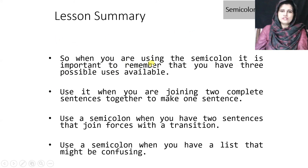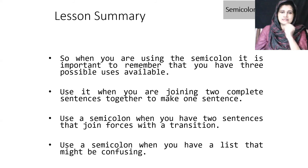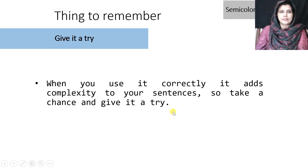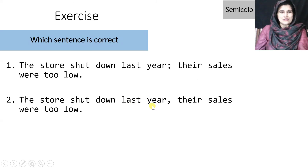Lesson summary: when using the semicolon, remember you have three possible uses. Use it when joining two complete sentences together to make a compound sentence. Use it when you have two sentences that join forces with a transition. Use it when you have a list that might be confusing. When you use it correctly, it adds complexity to your sentences — so take a chance and give it a try.